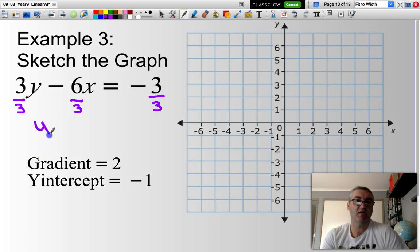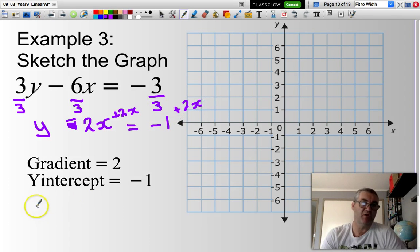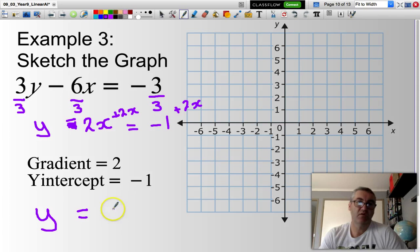This then would give me y minus 2x equals negative 1. Since 6 divided by 3 is 2. Then I would have to add 2x to both sides.